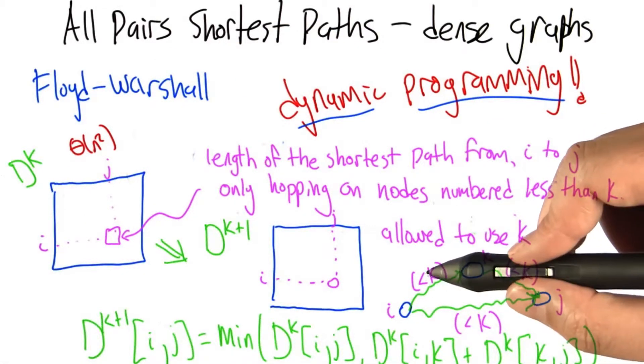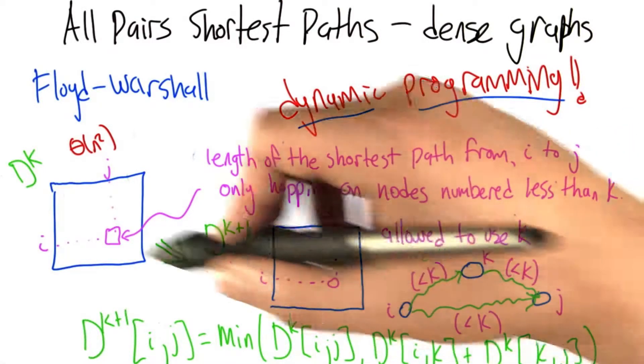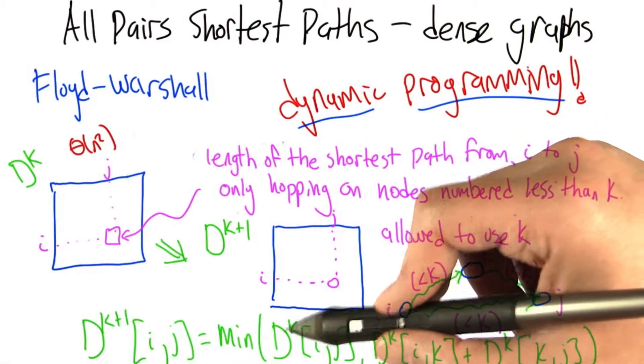So the shortest value, the length of the shortest path from i to k only using nodes less than k, we have that already. Someone gave it to us very helpfully.